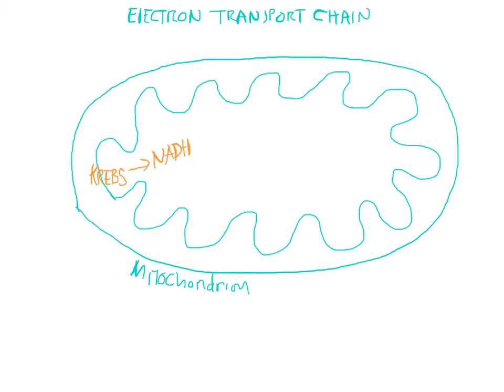This process causes the NADH to split into three different things: we have electrons, represented by E minus; we have hydrogen ions, represented by H plus; and thirdly, we have NAD plus created. NAD plus gets sent back to the Krebs cycle so that it can be re-energized and used again.